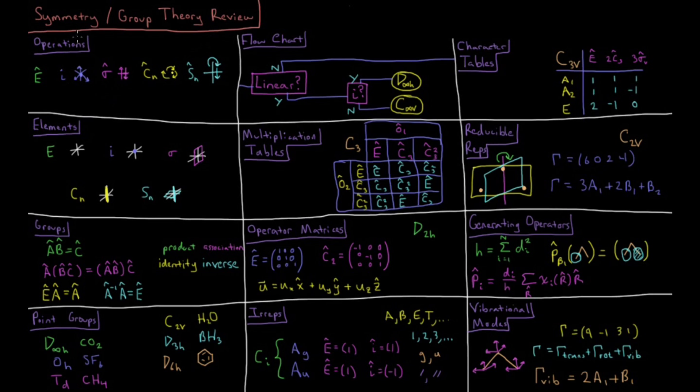So these symmetry operations come from symmetry elements, which are similar. We have E, which all molecules have, the identity element, an inversion center, something which we can invert through, a mirror plane through which we can operate the reflection,